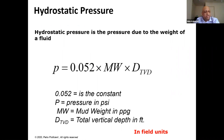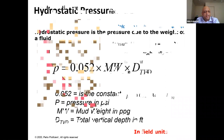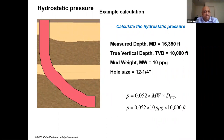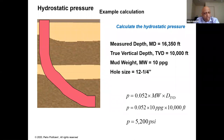For calculating hydrostatic pressure, you take into account true vertical depth. For example, with a 10 PPG mud system and a total vertical depth of 10,000 feet, your pressure at the bottom would be 5,200 PSI. It is important to note that hole size and measured depth are not relevant here — mud weight, total vertical depth, and the constant 0.052 are what matter.